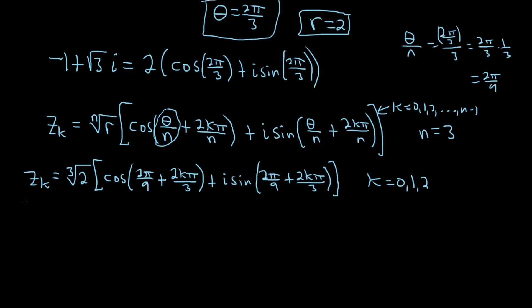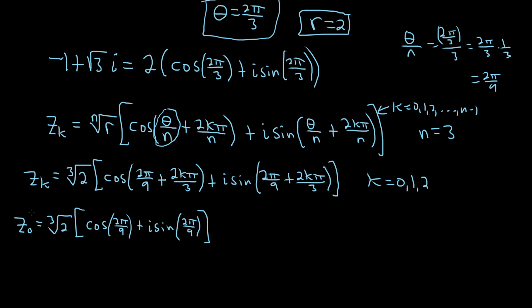For z sub 0, k equals 0, so the 2k pi over 3 term disappears. We get z sub 0 equals cube root of 2 times bracket cosine of 2 pi over 9 plus i sine of 2 pi over 9. This is why we leave it in trig form — the cosine of 2 pi over 9 is not a standard value.